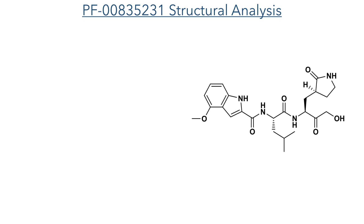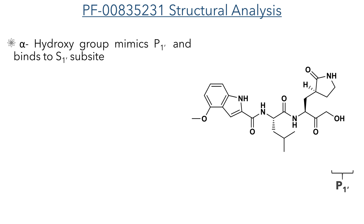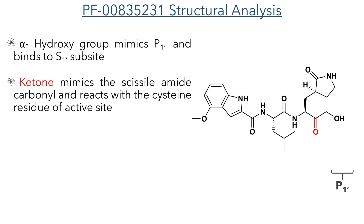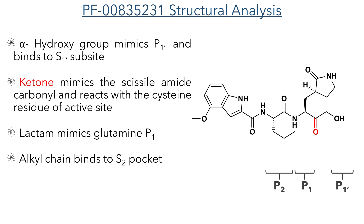With this knowledge of the structure of the target enzyme, we can analyse the structure of the drug candidate, known by its catchy name PF00835231. The hydroxyl group, alpha to the ketone, mimics the P1' residue and binds to the S1' subsite. The ketone mimics the scissyl amide carbonyl and reacts with the cysteine residue. The lactam mimics the P1 residue, which is a glutamine peptide in all of the natural substrates for this enzyme. The alkyl chain binds to the S2 pocket, and the indole group acts as a cap and optimises the lipophilicity, maximising the uptake of the drug into the cell.